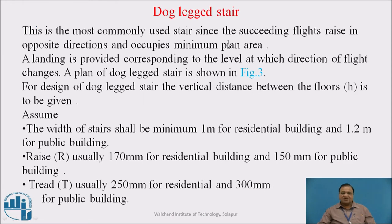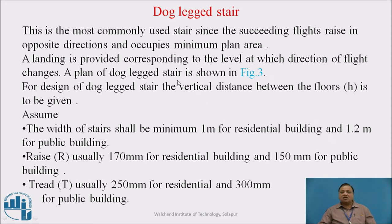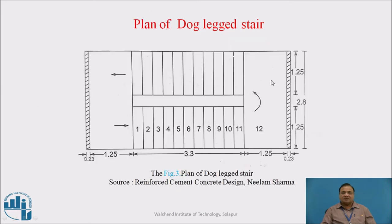Dog-legged stair. This is the most commonly used stair since the succeeding flights rise in opposite directions and occupy minimum plan area. A landing is provided corresponding to the level at which the direction of flight changes. A plan of the dog-legged stair is shown in figure number 3, which shows the plan with mid-landing where the direction changes.